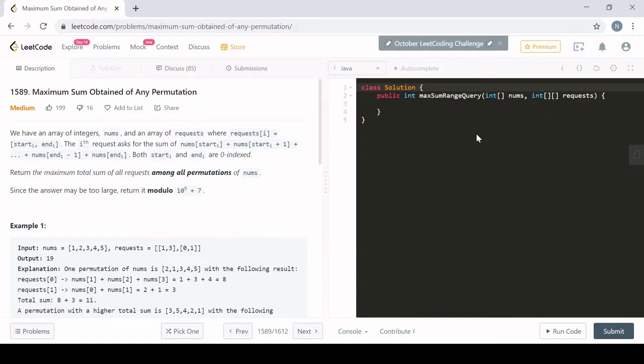The problem says that we have an array of integers and an array of requests, and the i'th request gives us the starting position and the ending position of that request. What that means is we go to the start index that we're given and we add up every number all the way to the ending index, and we're told that the start and end indexes are zero indexed. It doesn't seem like too hard of a problem so far, but what makes it tricky is that we're given the freedom to shuffle the nums array, and we want to return the maximum total sum of all the requests among all permutations of nums. And because this answer might be large, we want to return it mod 10 to the 9th plus 7.